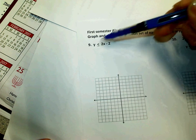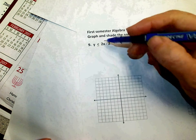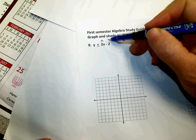So this one is already ready to graph. This is the slope, and this is the y-intercept.